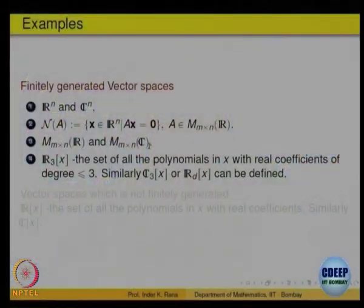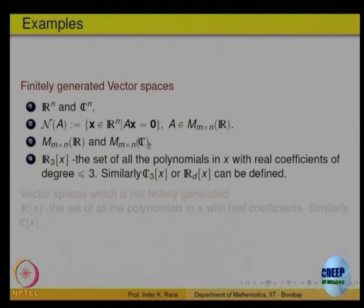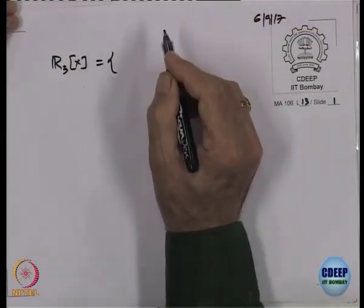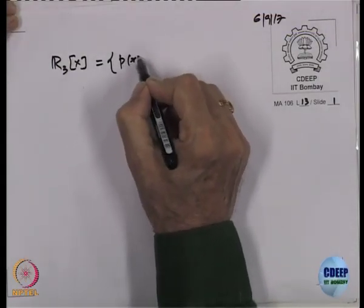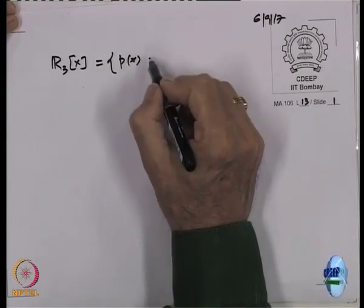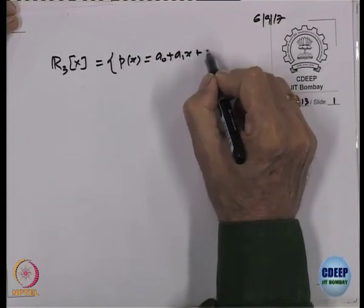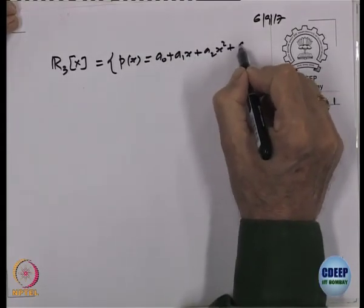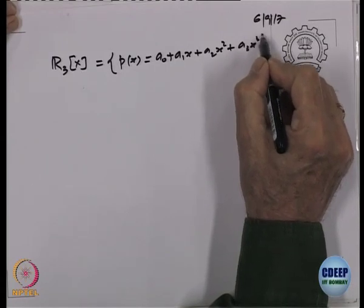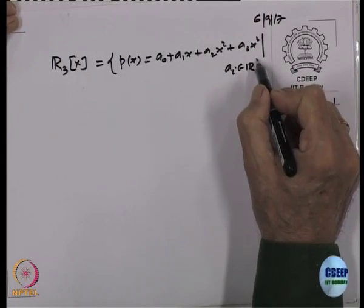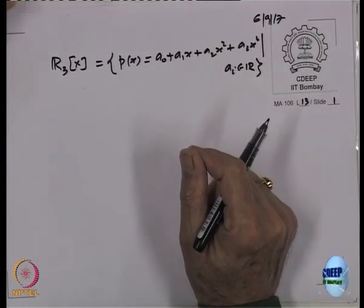Let us look at R3[x], polynomials of degree less than or equal to 3 — is it finitely generated? Elements of R3[x] are polynomials P(x) of the form a0 plus a1·x plus a2·x² plus a3·x³, where the ai's are real entries.